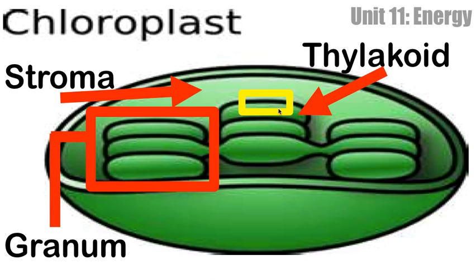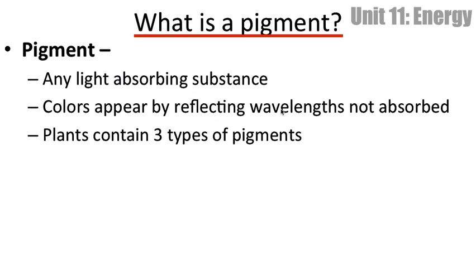The first stage of photosynthesis takes place right on the membrane of a thylakoid, and that's what we're going to be focusing in on. If I zoomed in on there, I would see lots of little green blobs. These green blobs are known as pigment — a pigment is any light-absorbing substance.